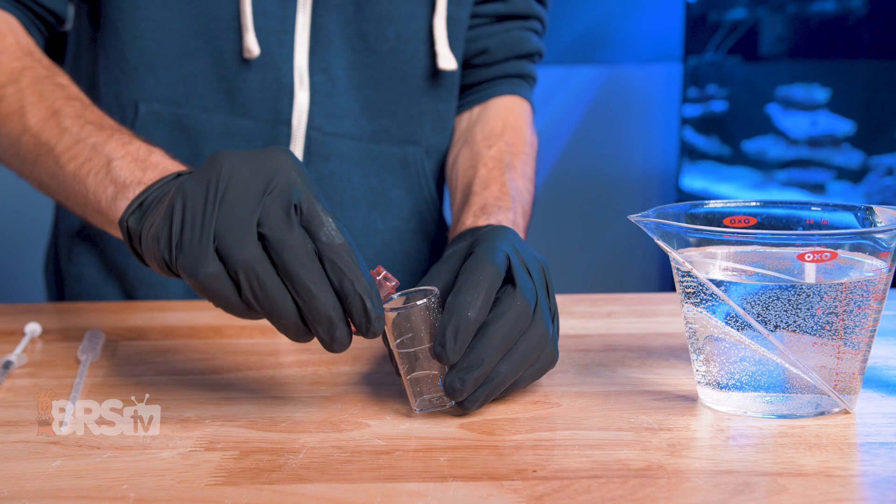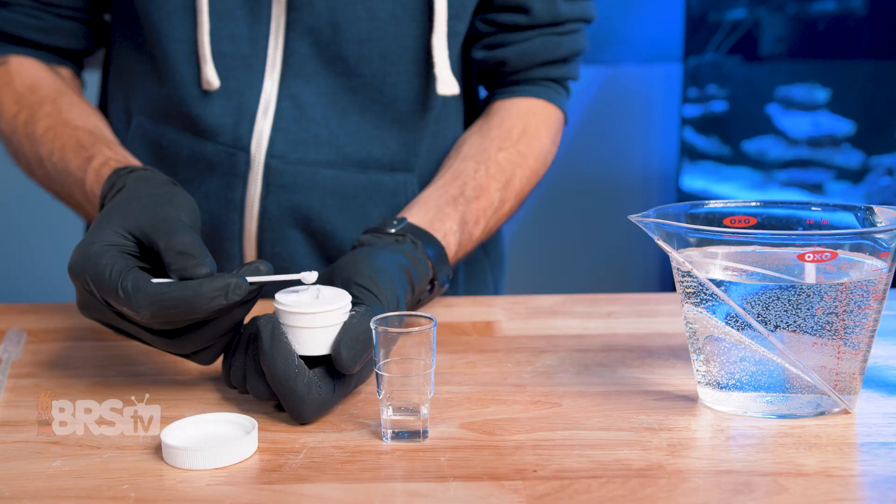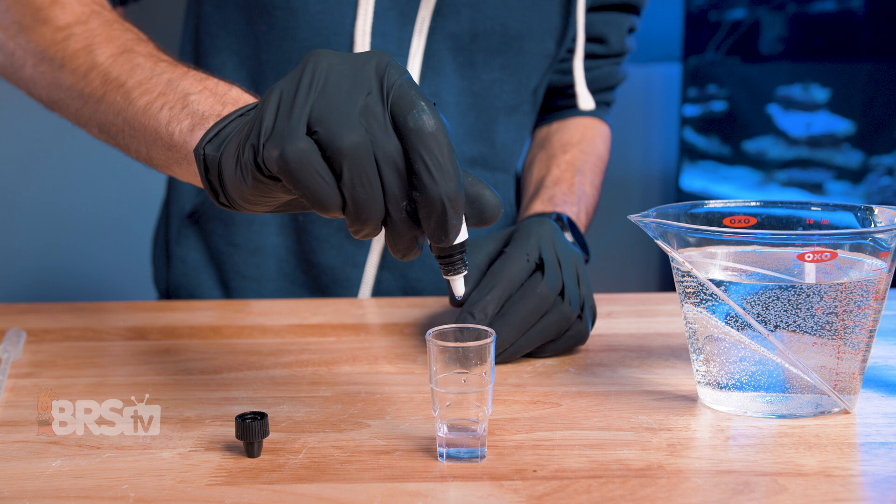Now we're onto the fifth and sixth stages and they are going to be very familiar. Add one scoop of reagent two and gently shake until dissolved. Then add two drops of reagent three and mix. Then one drop of reagent four and mix. Lastly, one drop of reagent five and a final mix. Let the sample sit for two minutes.